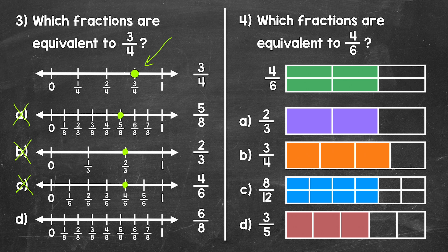Now I do want to mention: looking at two thirds, notice that four sixths and two thirds are equivalent to each other, but that's not our question here. Lastly, let's look at D, where we have six eighths. Six eighths is right here on the number line, and we can see that it's at the same place as three fourths. Six eighths is equivalent. So for number three, three fourths and six eighths are equivalent fractions.